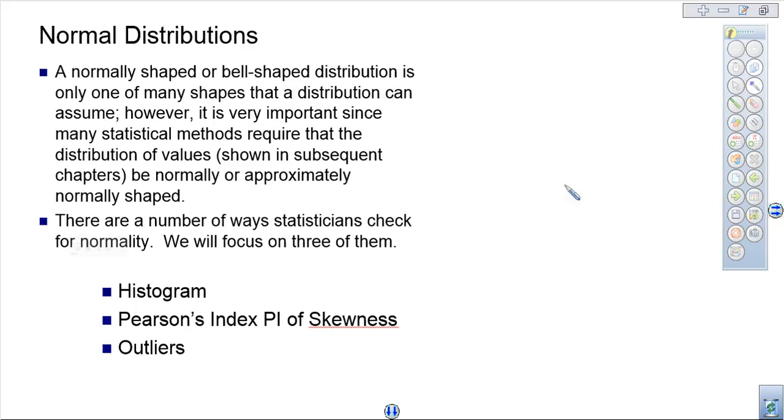It's important since many statistical methods require distribution of values, and what we need is that normal or approximately normal shape. So there are several ways to check: histogram, the Pearson index, or outliers.